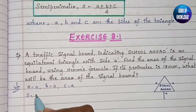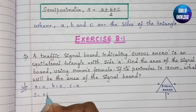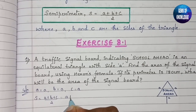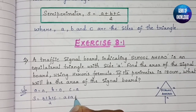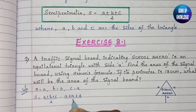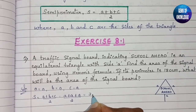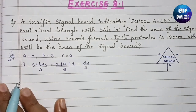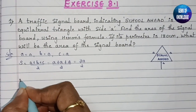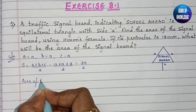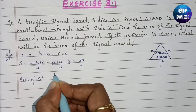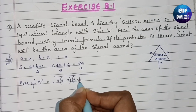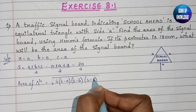The formula for S is (A plus B plus C) divided by 2. Our A is A, B is also A, C is also A, so S equals (A plus A plus A) divided by 2, which gives us 3A by 2. Now let us substitute this into the area formula: area = root of S(S minus A)(S minus B)(S minus C). Substituting S = 3A/2, we get root of (3A/2) into (3A/2 minus A) into (3A/2 minus A) into (3A/2 minus A).